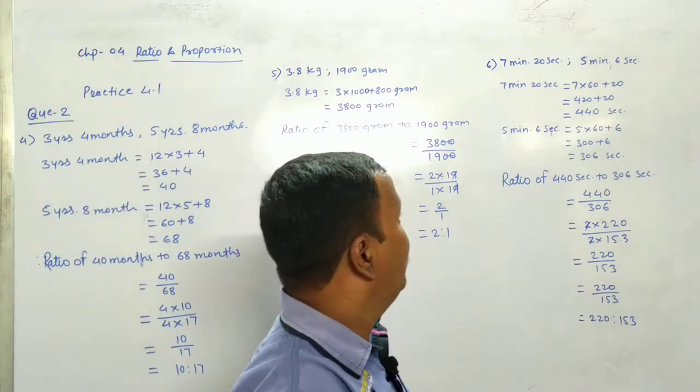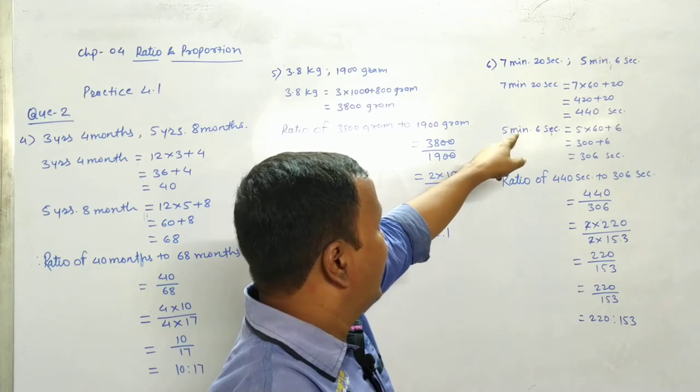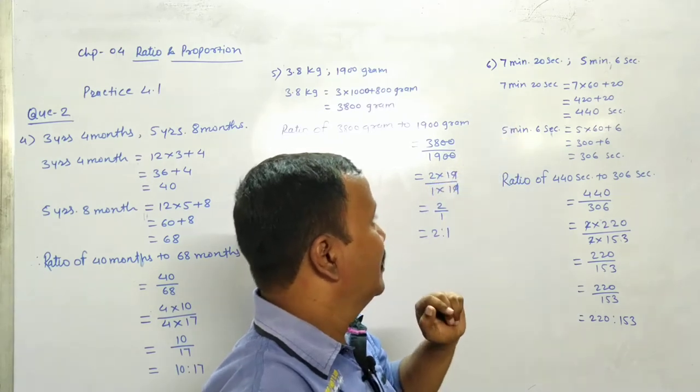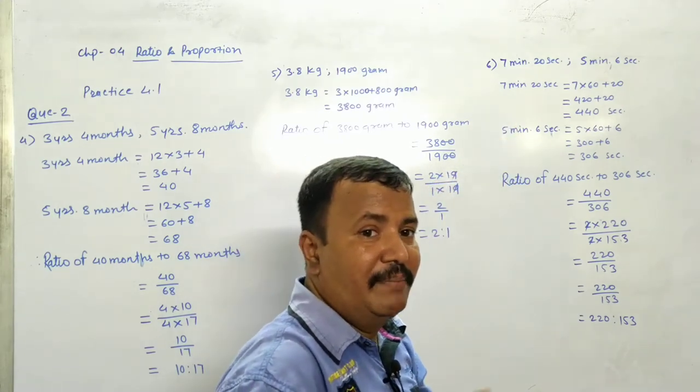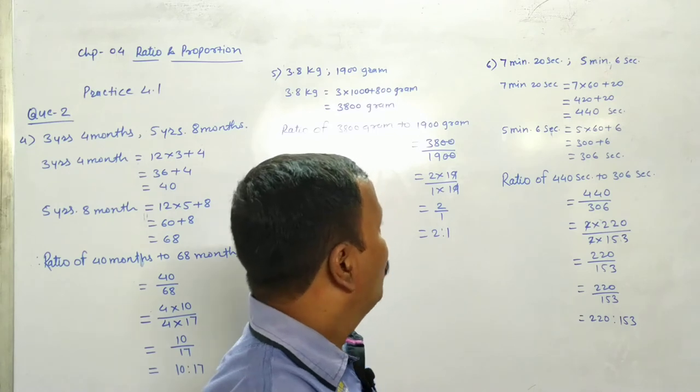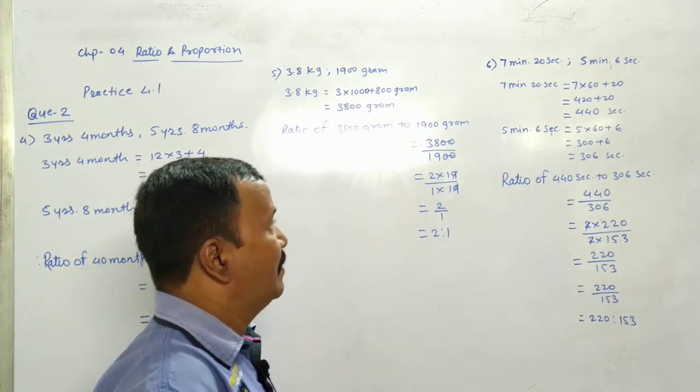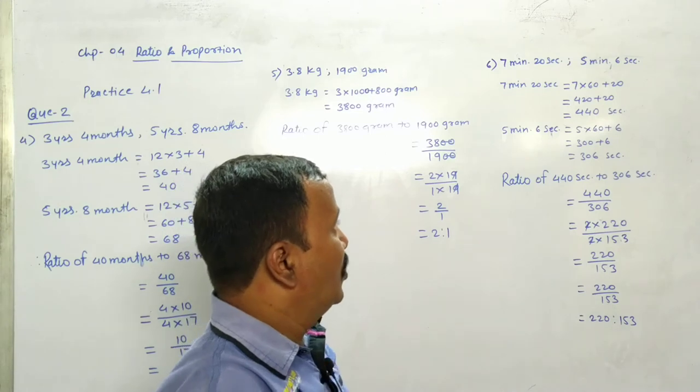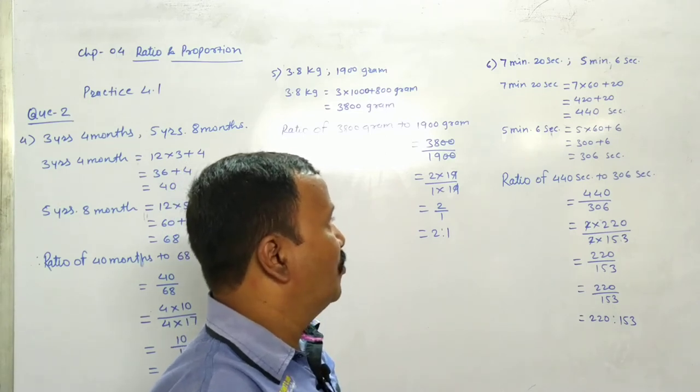Okay? Sixth question. Sixth sum is, 7 minutes 20 seconds and 5 minutes 6 seconds. So, minute ko second mein convert kiya. So, 7 minutes 20 seconds is equal to 7 into 60 plus 20. That is 420 plus 20. Answer is 440 seconds.